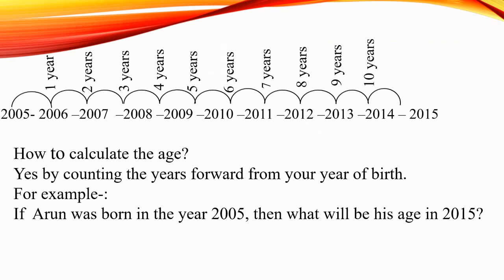So students, now let us calculate the age. By counting the years forward from your year of birth to now. For example, if Arun was born in the year 2005, then what will be his age in 2015? You can see here the timeline on screen — from 2005 to 2015, if you count forward from when Arun was born to 2015.